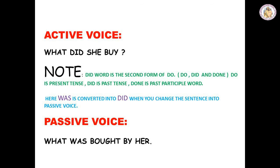What did she buy? This is in active voice. 'Did' is the past tense of 'do'. When you write passive voice, 'did' gets converted to 'was'. 'She' is converted to 'her'. So: what was bought by her? The meaning of both sentences is the same.